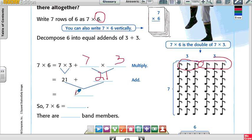42. It's called the total. So 7 times 6 is 42. So there are how many numbers there? 42. So what are you doing? Band members.